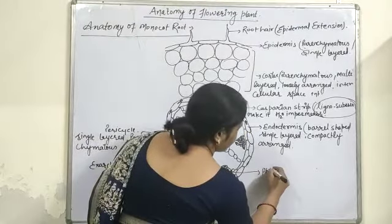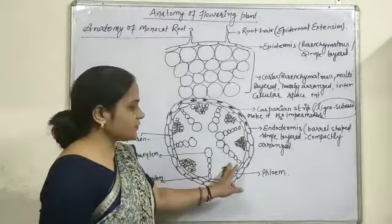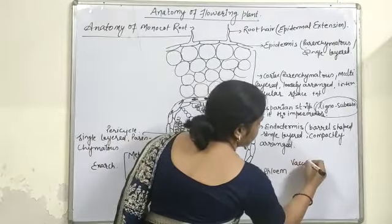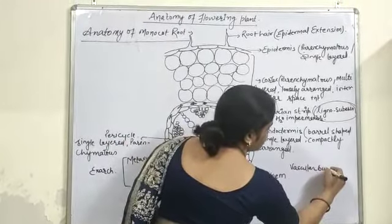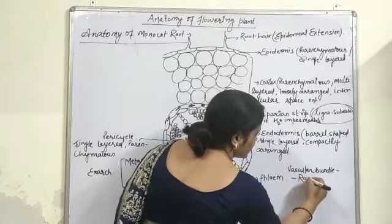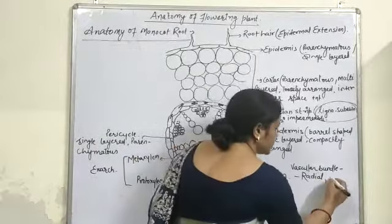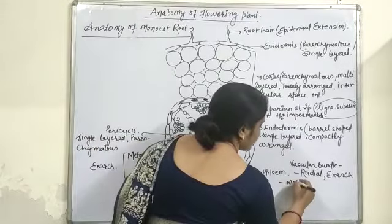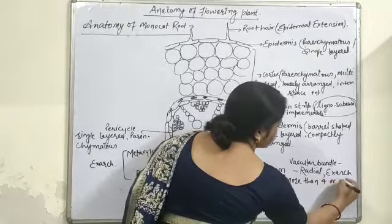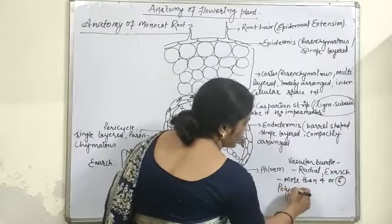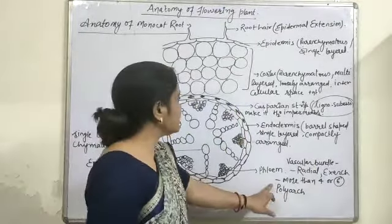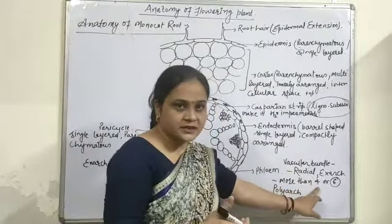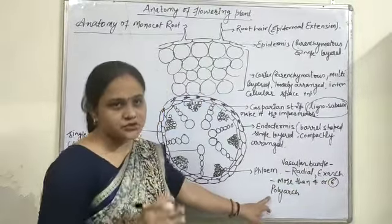When xylem as well as phloem are present on different radii, this type of vascular bundle is known as a radial vascular bundle. The number of vascular bundles is more than 4 — you can say 6 — and this condition is known as polyarch. This is the main difference between the monocot and the dicot; the dicot consists of only 4, that is the tetrarch, whereas here 6 vascular strands are present, so it is polyarch.